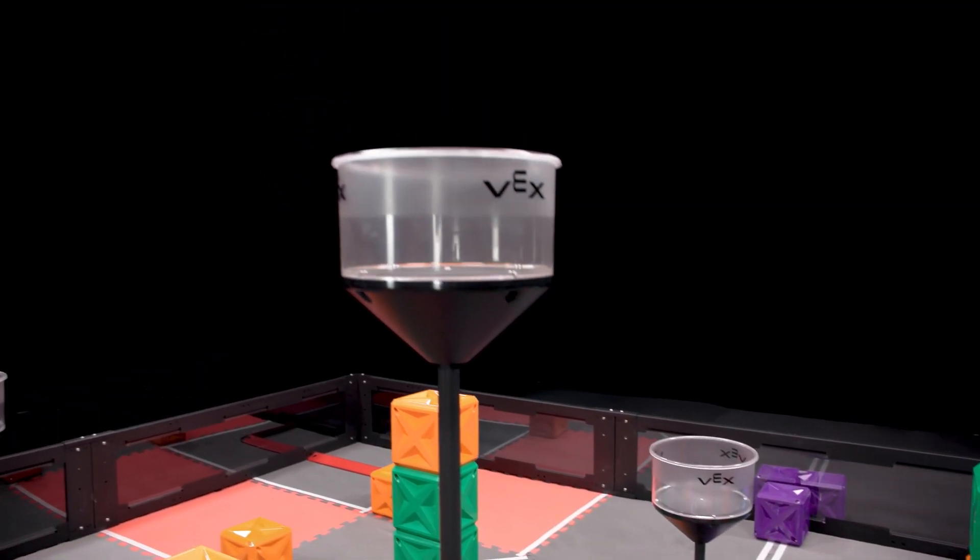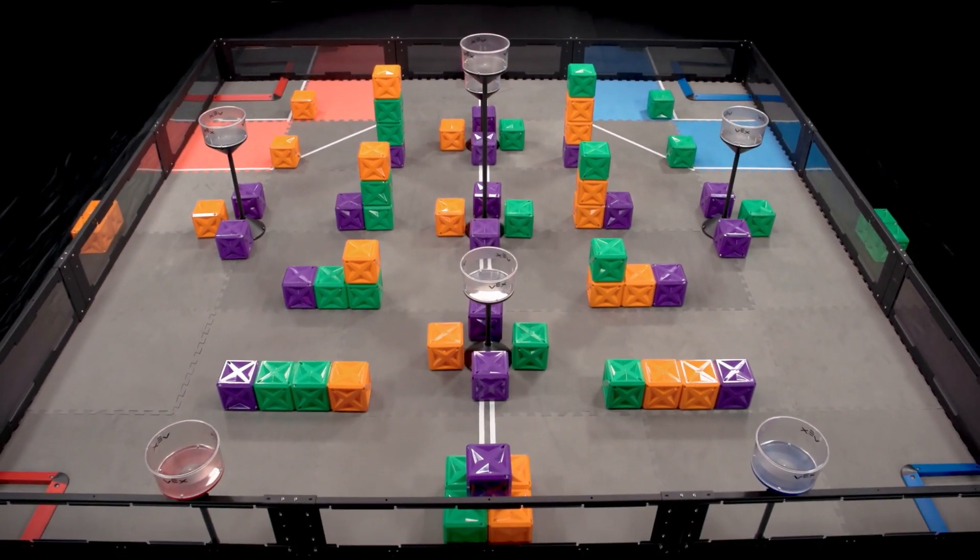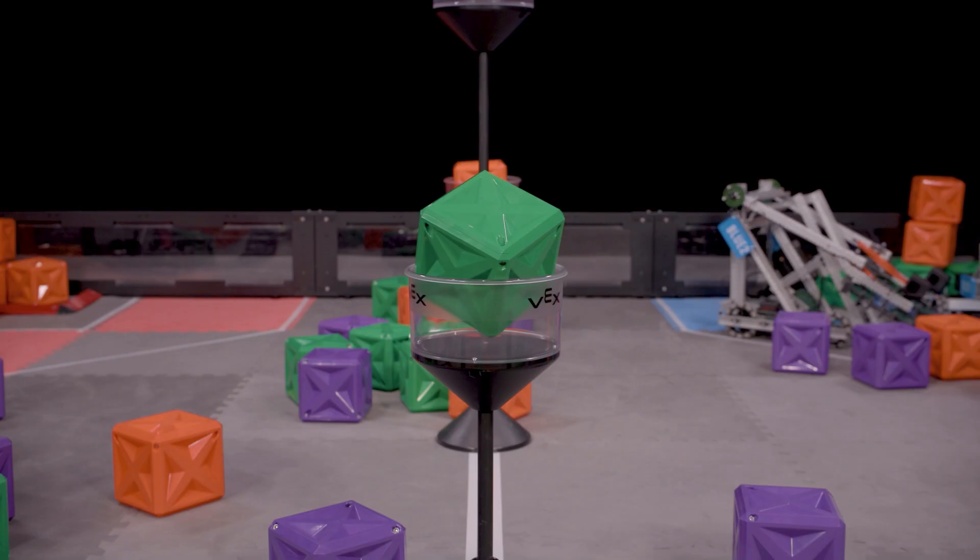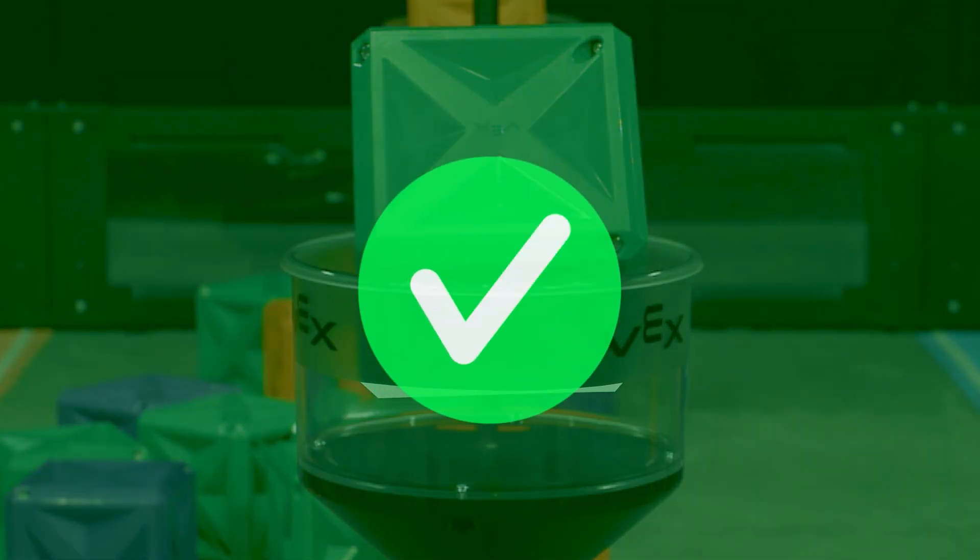To increase the point value of a specific colored cube, cubes must first be placed into towers located around the field. To be considered as placed, any part of a cube must be breaking the plane of a tower's placing line at the end of the match. The placing line is defined as the textured or frosted surface which extends downward from the top of the tower. Simply put, if any part of the cube is below this plane at the end of the match, then it counts as placed.